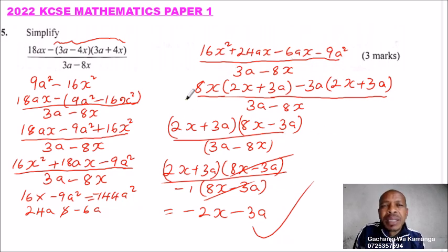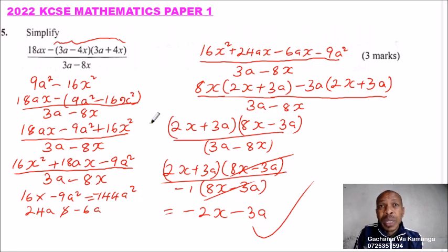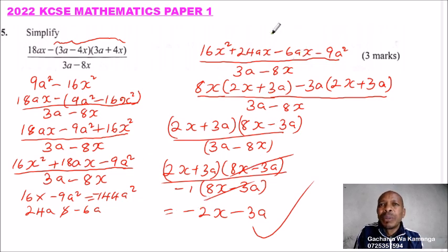So you are being tested whether you know how to simplify a quadratic expression even when you have two unknowns. We do that by treating one of the variables or unknowns as a constant, and that is what has helped us be able to factorize and get 3 marks.